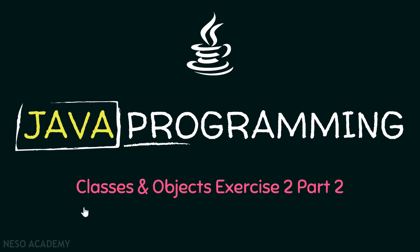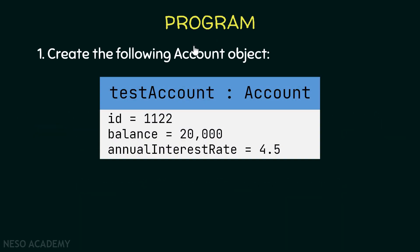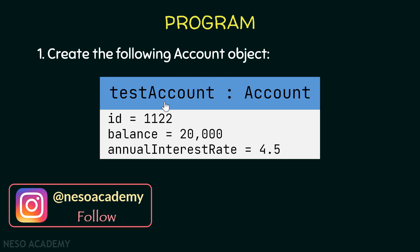Hello friends and welcome back. In this lecture we will write a program and use the Account class. First we want to create an Account object. This is a UML representation — the object is called testAccount and its type is Account. The id should be 1122, the balance should be 20,000, and the annual interest rate should be 4.5.